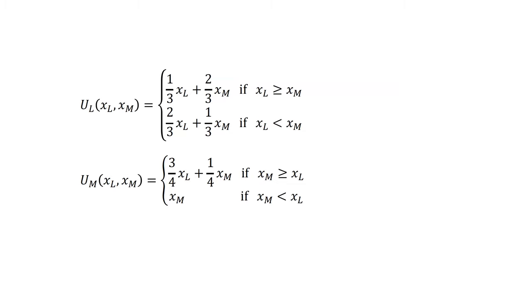UL and UM are Linda and Marco's utility functions; XL and XM are their outcomes. Both Marco and Linda give positive weight to the payoff of the other in most circumstances, except for Marco, who only cares about himself when he is behind Linda. Marco and Linda know each other's utility functions. What is the equilibrium of the trust game with these distributional preferences?